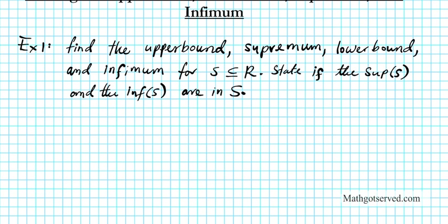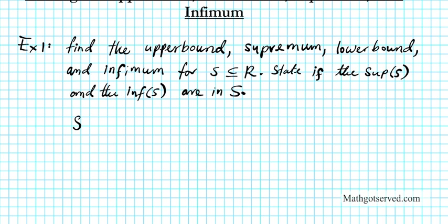Let's start out by finding the upper bound. Let me write down the set. The set S is the collection of x's that satisfies the inequality x² < 11. This is the set S which is a subset of the reals.